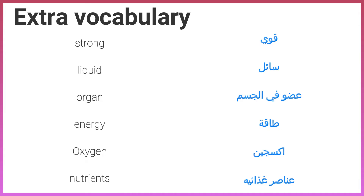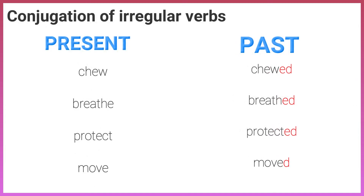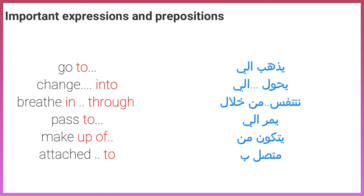Extra vocabulary: organ, energy, oxygen, nutrients. Conjugation of verbs — regular verbs, present and past: use/used, swallow/swallowed, pump/pumped, attach/attached, lift/lifted. Irregular verbs: chew/chewed, breathe/breathed, protect/protected, move/moved.